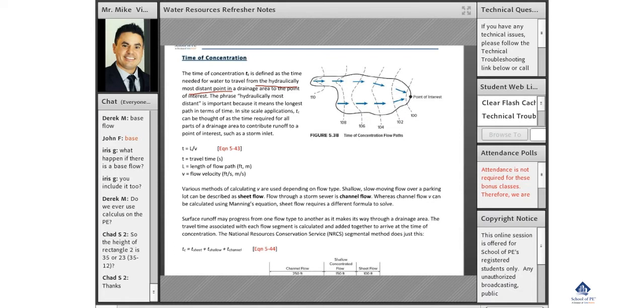Not frequently seen, but Tc is equal to the length of the flow path divided by the flow velocity. The PE exam, not frequently seen in real life, but the PE exam likes this because it's an easy calculation. L over V gives you the Tc or they'll just give you the Tc.